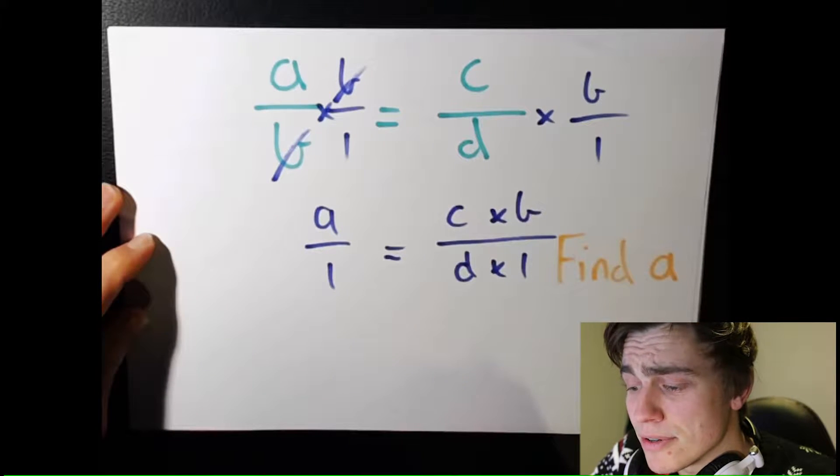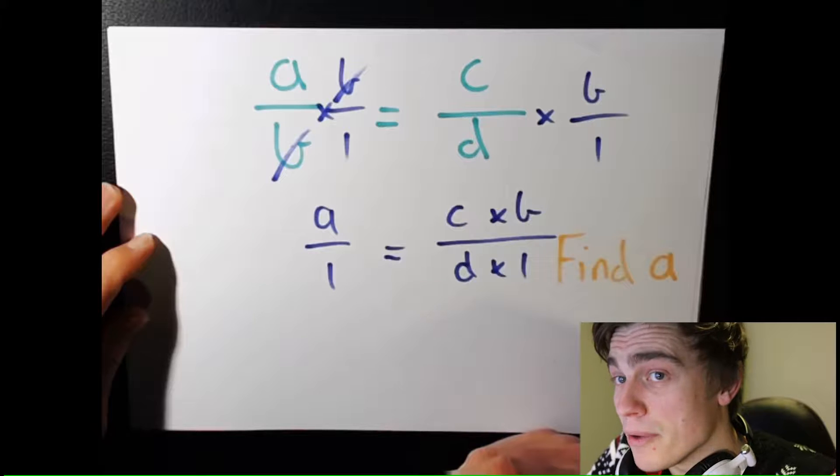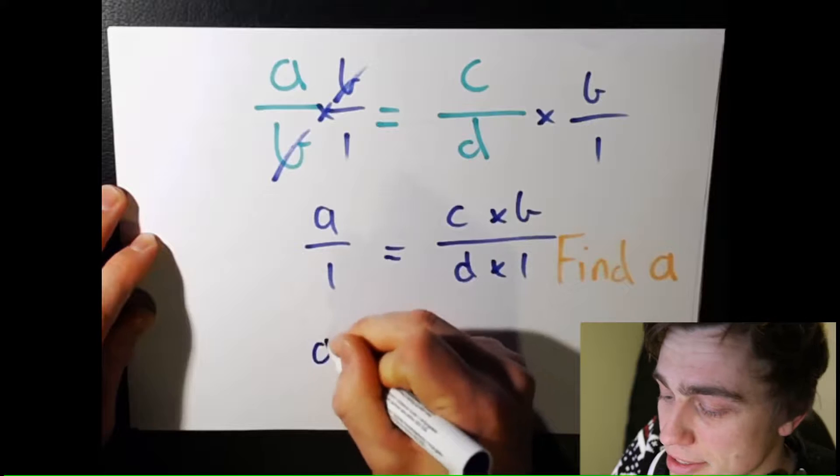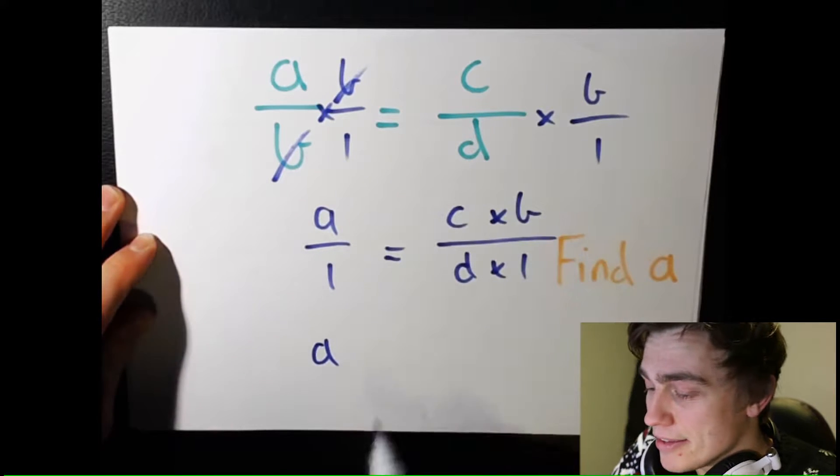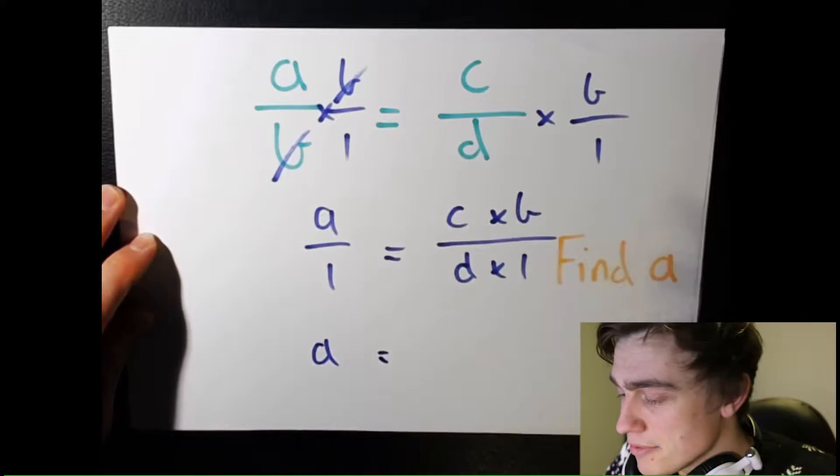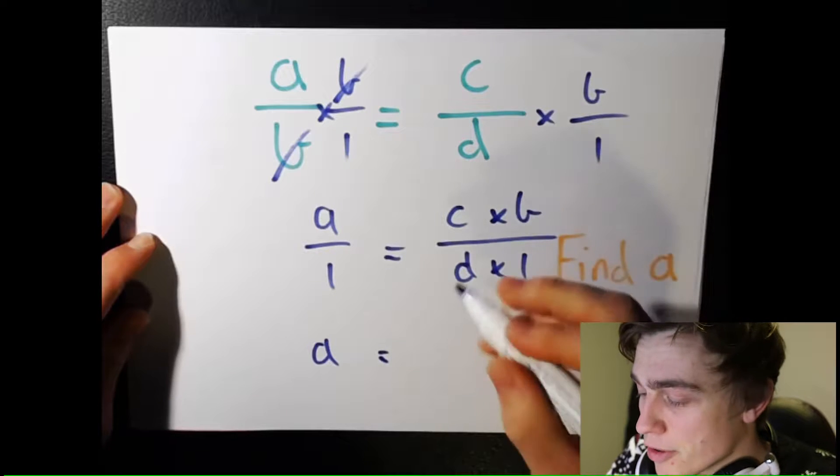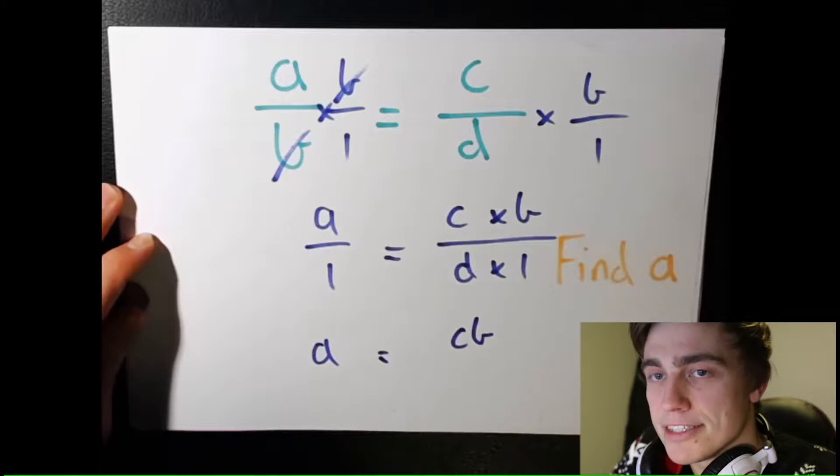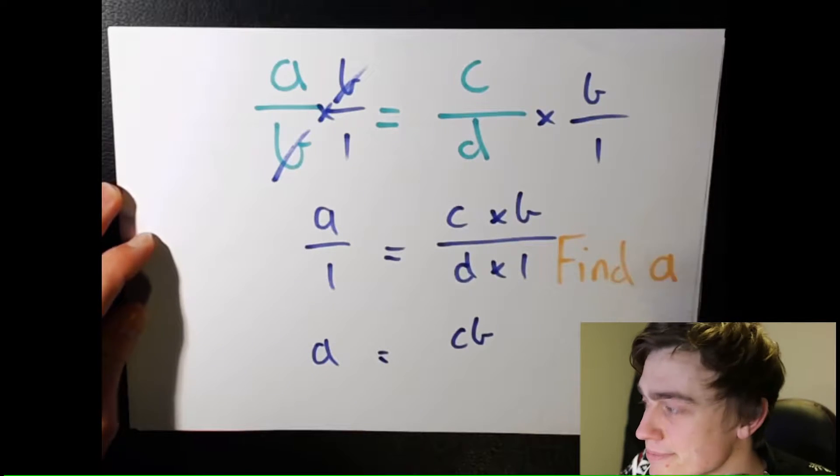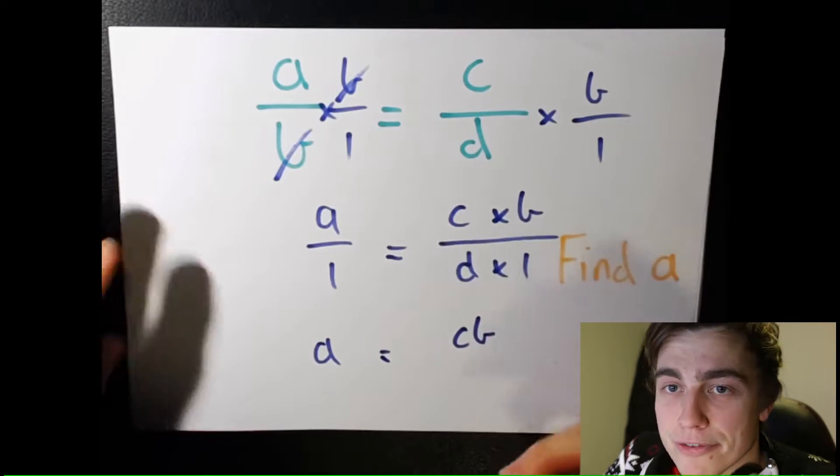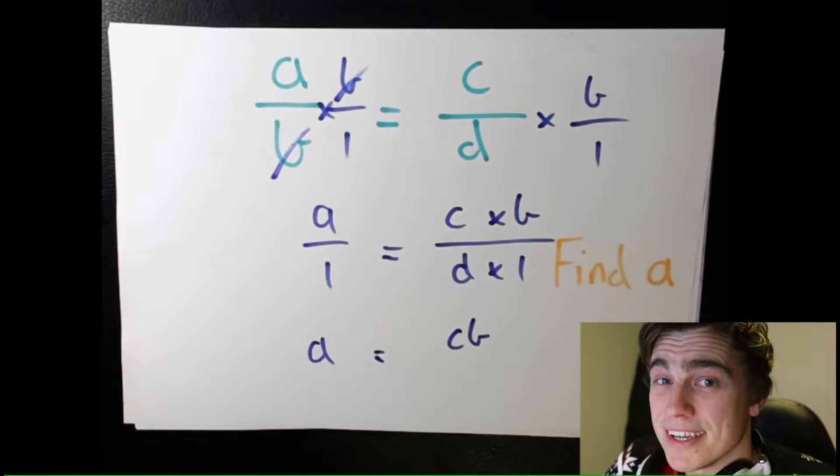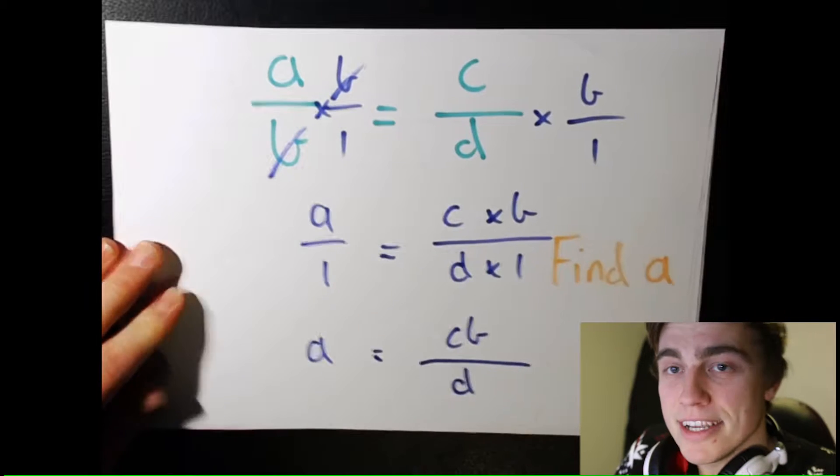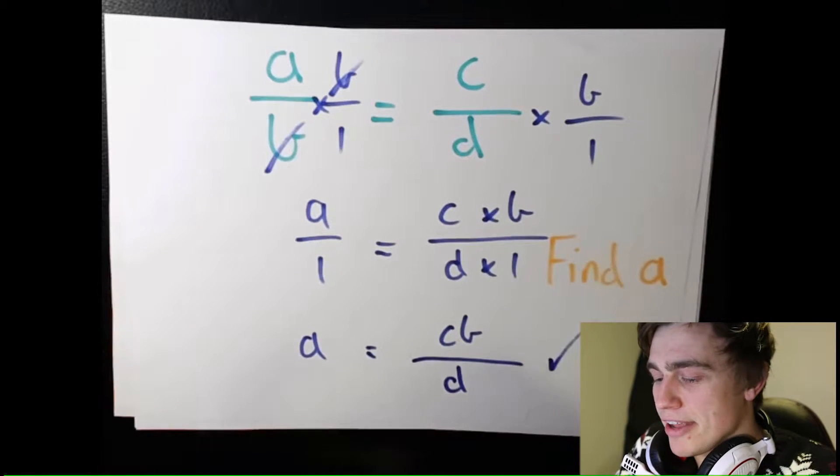So what is A divided by 1? It's gonna be itself, isn't it? So we can rewrite this with just A. And over here on the other side of the equal sign we've got C times B, or we can just write CB, divided by D times 1. What is D times 1? It's gonna be itself. For example, if I've got 10 times 1, the answer is 10. So it's gonna be D. Cool. Let's tick that. We've found A.